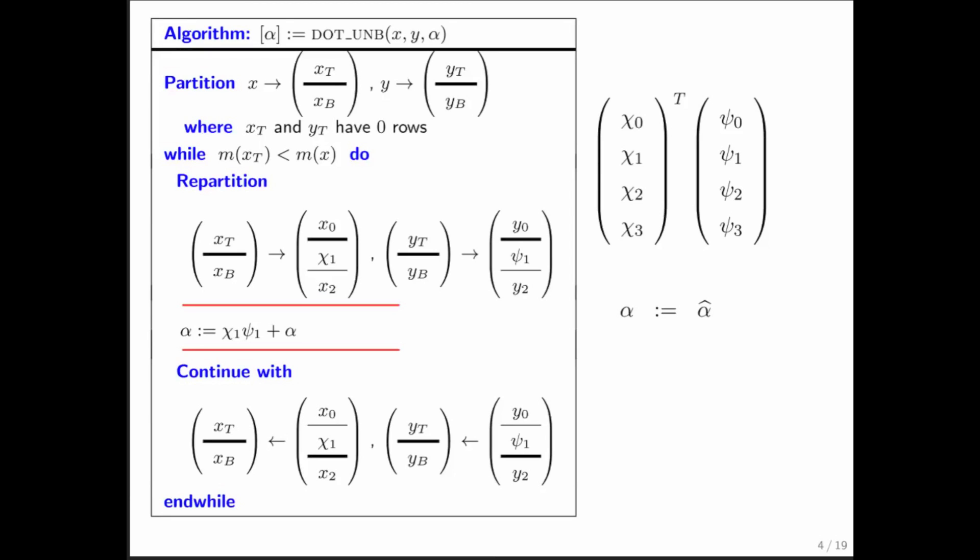Now here's the algorithm on the left in FLAME notation. And let's just execute it. So what we have here on the right is an example of two vectors of size 4 with which we're going to take the dot product. And we're going to demonstrate how alpha is being updated as the algorithm executes.